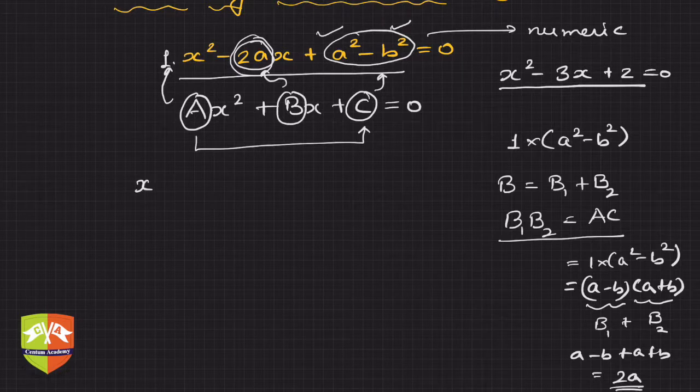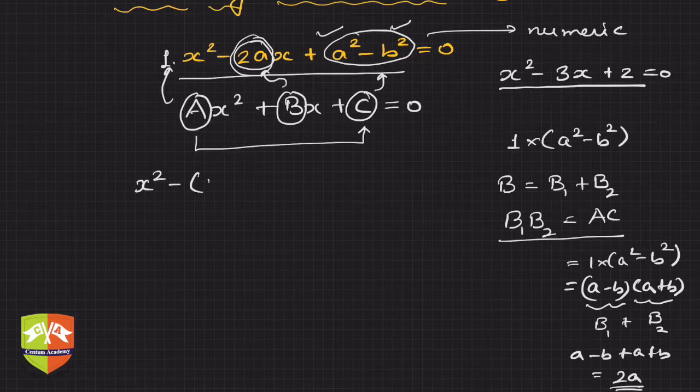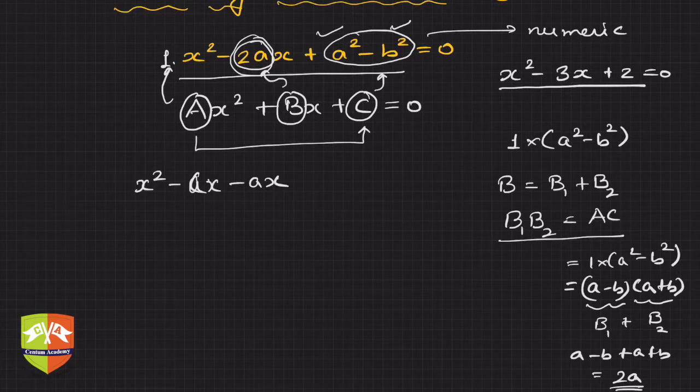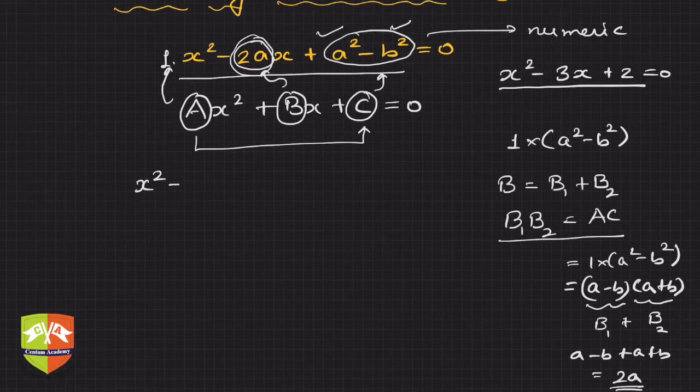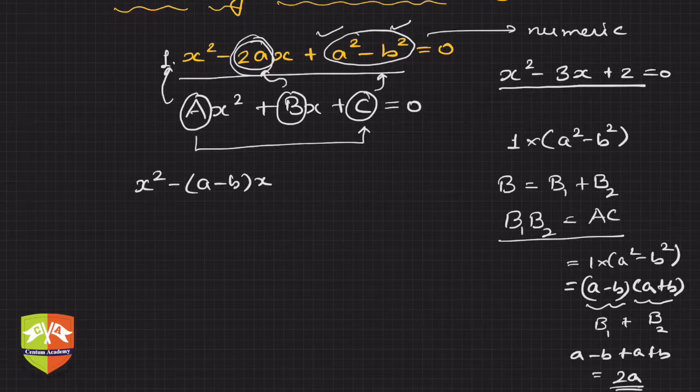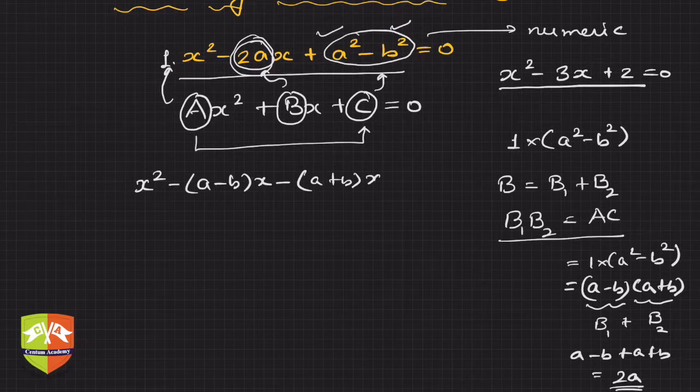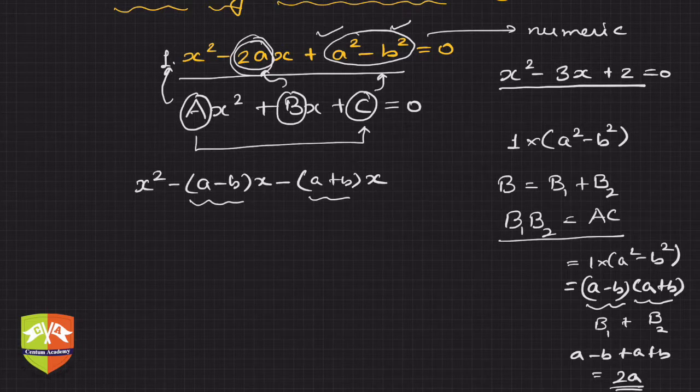So let's split like that. I will write x² - 2a can be written as minus ax minus ax. Basically x² + (a - b)x - (a + b)x. If you see I split the middle term like this into (a - b) and (a + b). The sum of these two terms is -2a clearly.